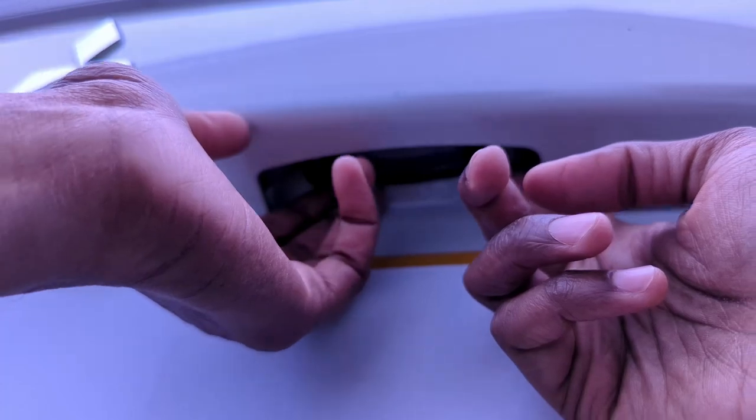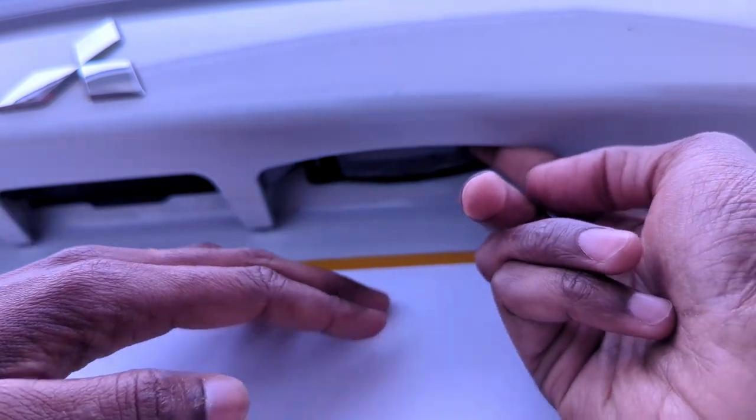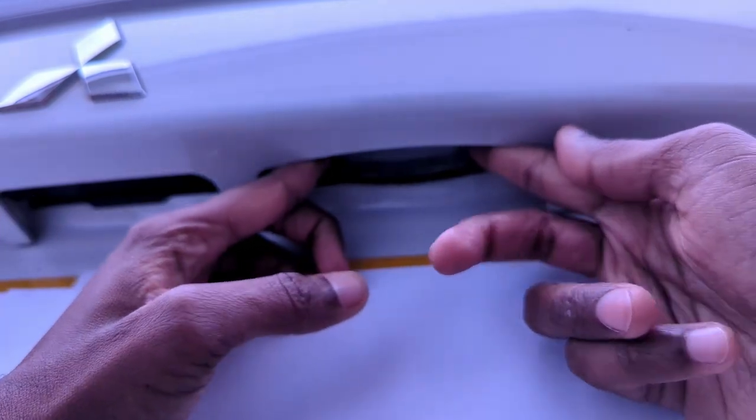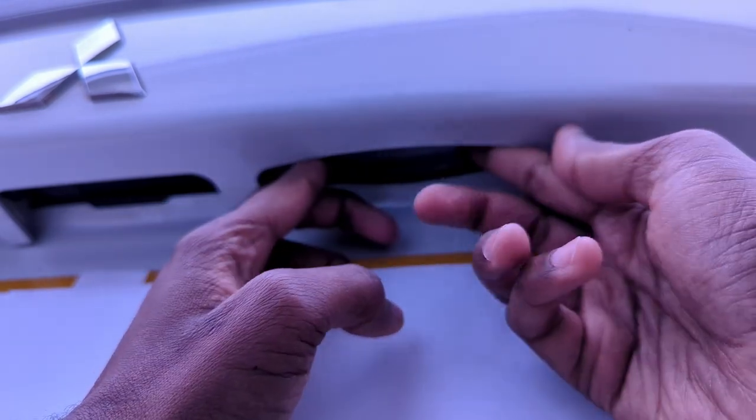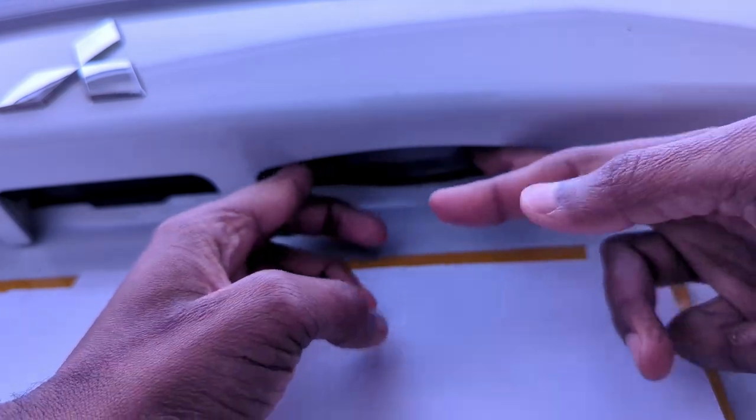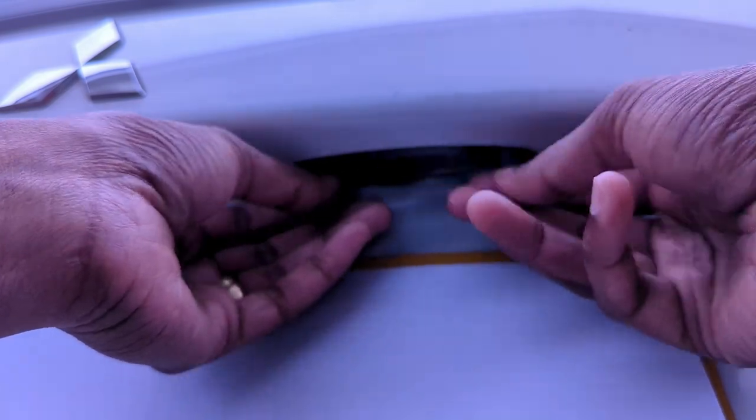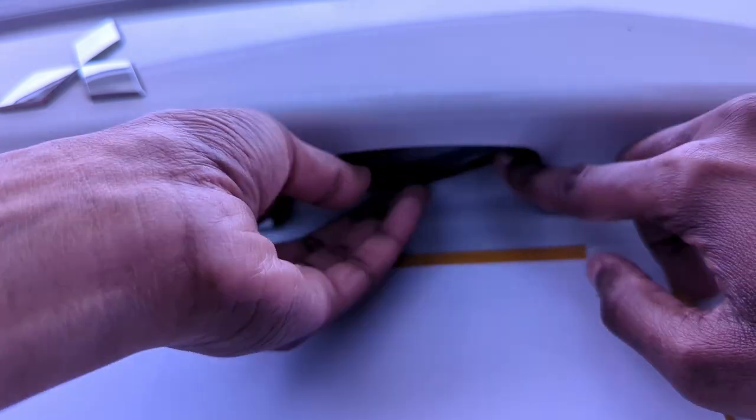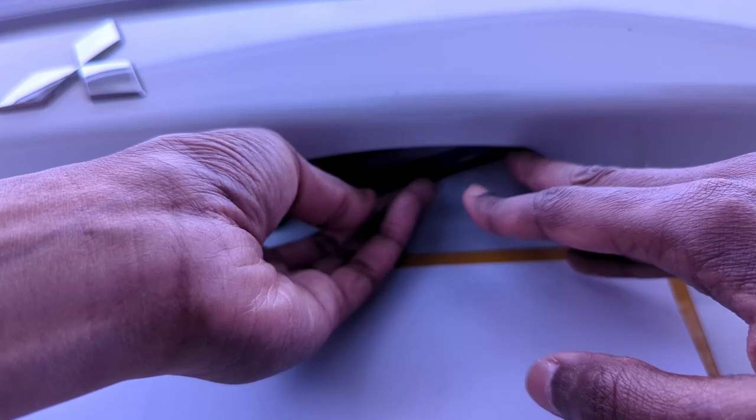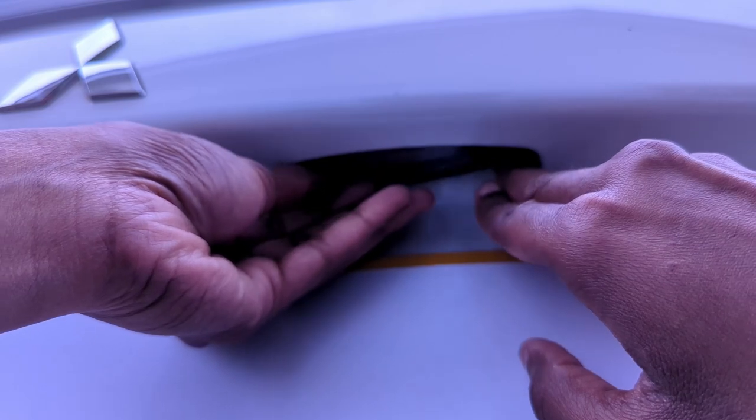First thing we need to do is just loosen it up. I find the seals get a little bit stuck here, so just give it a little wiggle with your finger. Then push towards the left and it should just feel a bit of a give and be able to be popped out. What you want to do is just tip it down like so.